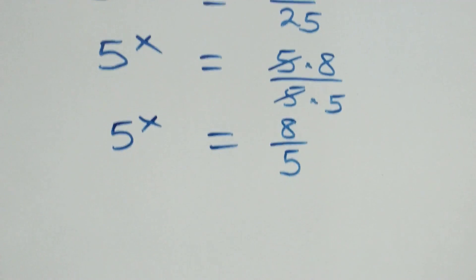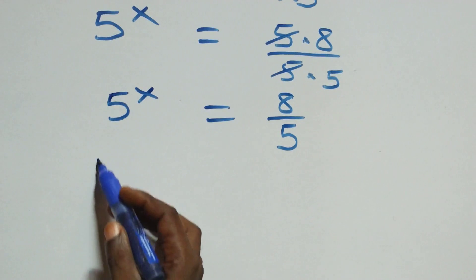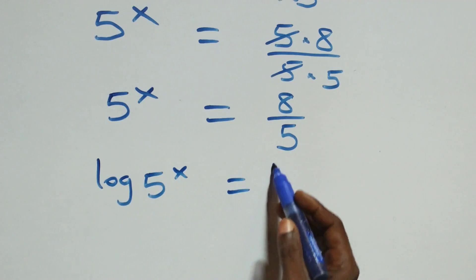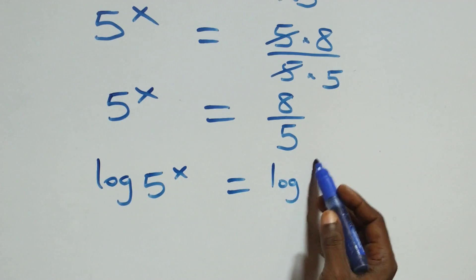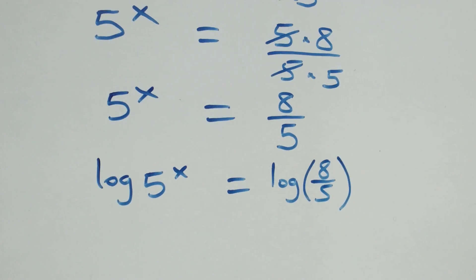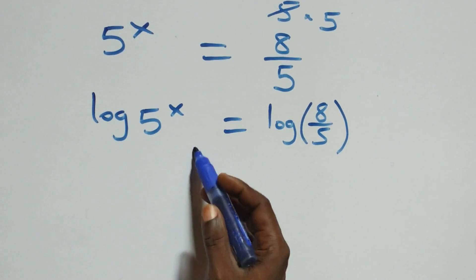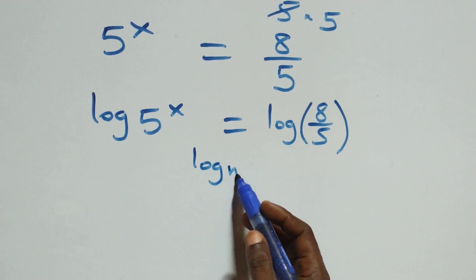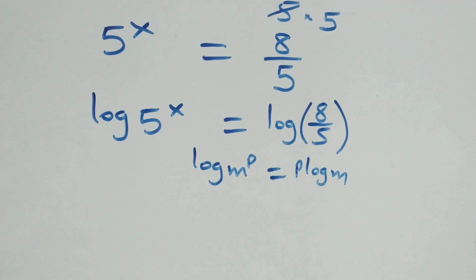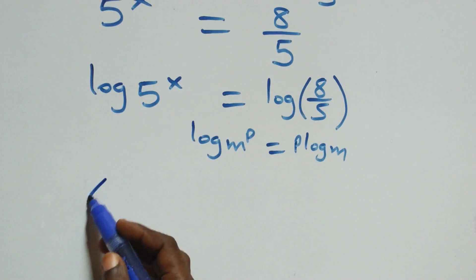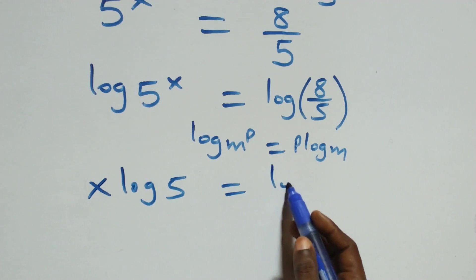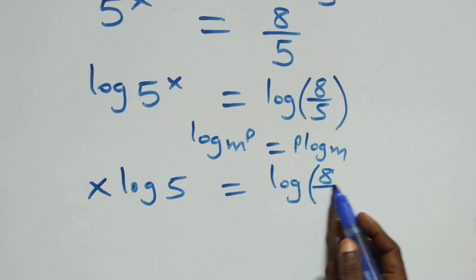Next step, we take the log on both sides. We have log of 5 raised to power x equals log of 8 over 5. We then apply the power rule of logarithms: when we have log m raised to power p, this is the same as p times log m. So this becomes x times log 5 equals log of 8 over 5.